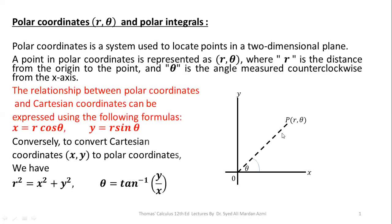These are the transformation equations through which we can transform a Cartesian coordinate system into a polar coordinate system. x is equal to r cos theta, y is equal to r sine theta, and these are the reverse equations: r squared is equal to x squared plus y squared, and theta is equal to tan inverse of y over x.